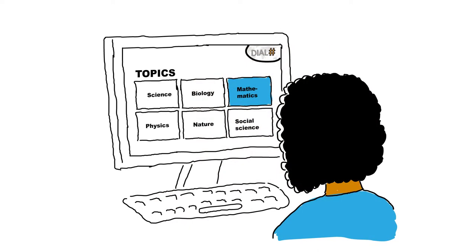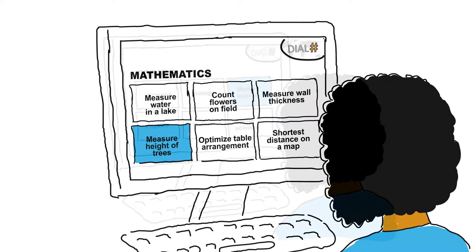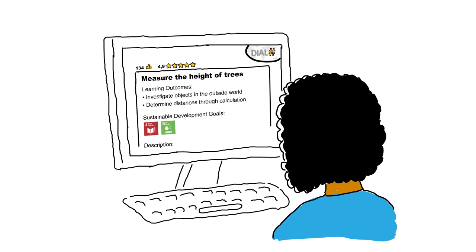So she uses one of the school computers to open the DIAL website. She chooses mathematics. She browses the titles of the active learning items and sees one about measuring the height of trees. The learning outcomes match those of her teaching, so she downloads it in her preferred language and goes through the instructions and the reference material.